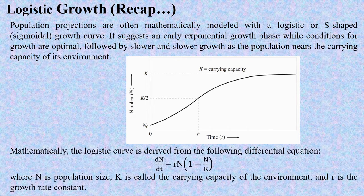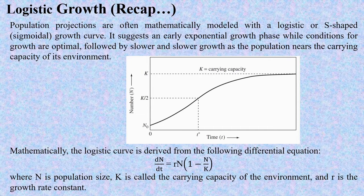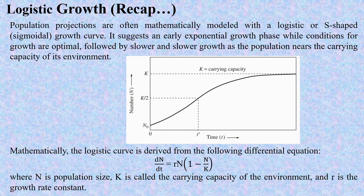Mathematically, the logistic curve is derived from the following differential equation: dn/dt is equal to rN times (1 minus N by K), where N is the population size, K is the carrying capacity of the environment, and r is the growth rate constant.